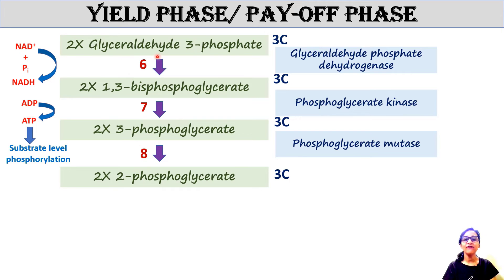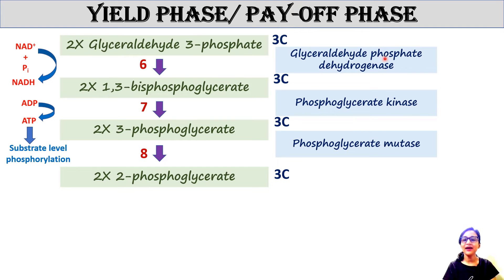We have two molecules of glyceraldehyde-3-phosphate. Each molecule of glyceraldehyde-3-phosphate is converted into 1,3-bisphosphoglycerate using inorganic phosphate (Pi). One molecule of NADH is generated from each reaction. The enzyme used is glyceraldehyde-3-phosphate dehydrogenase.